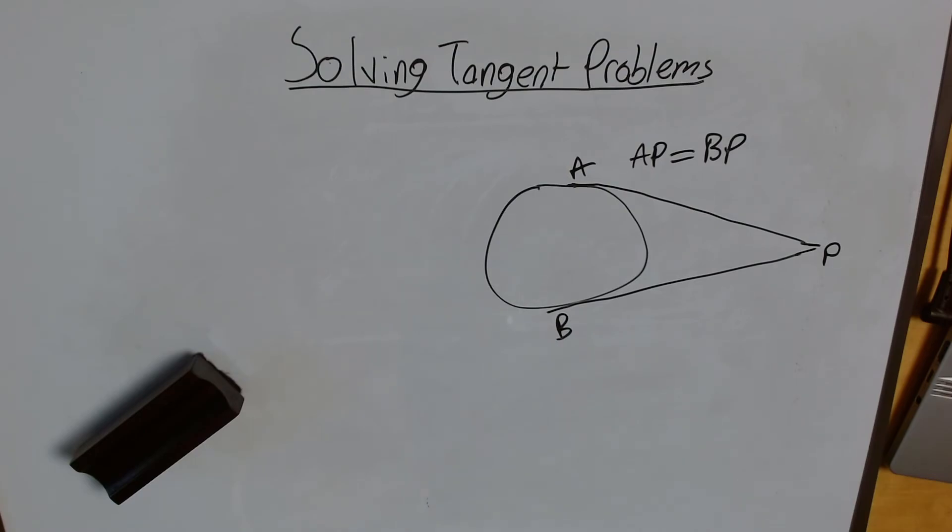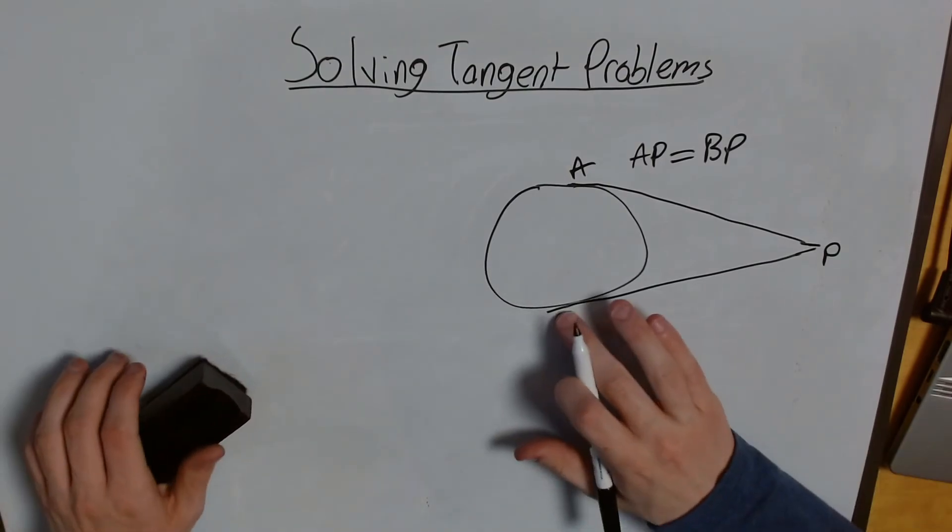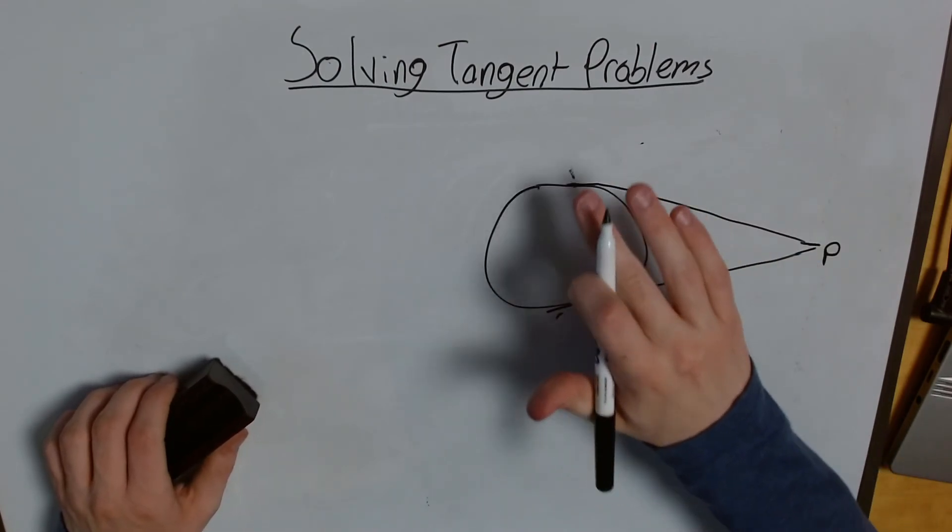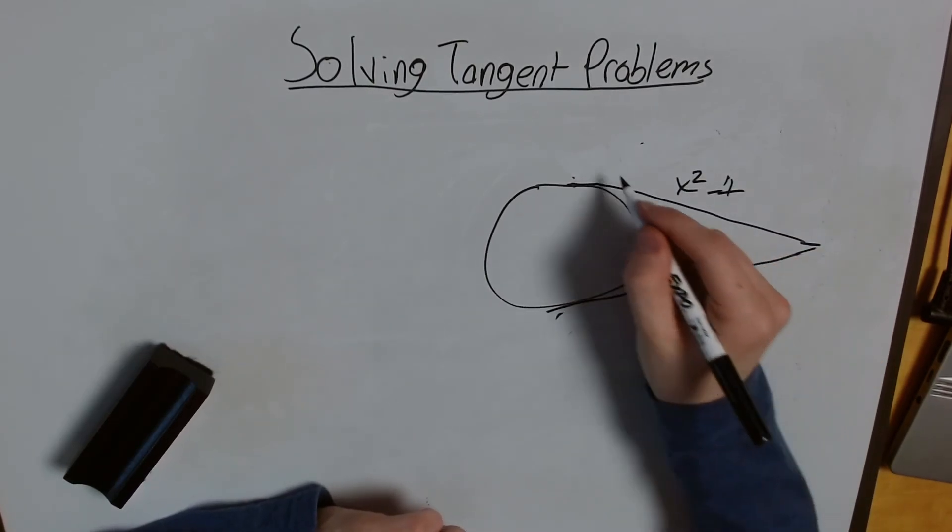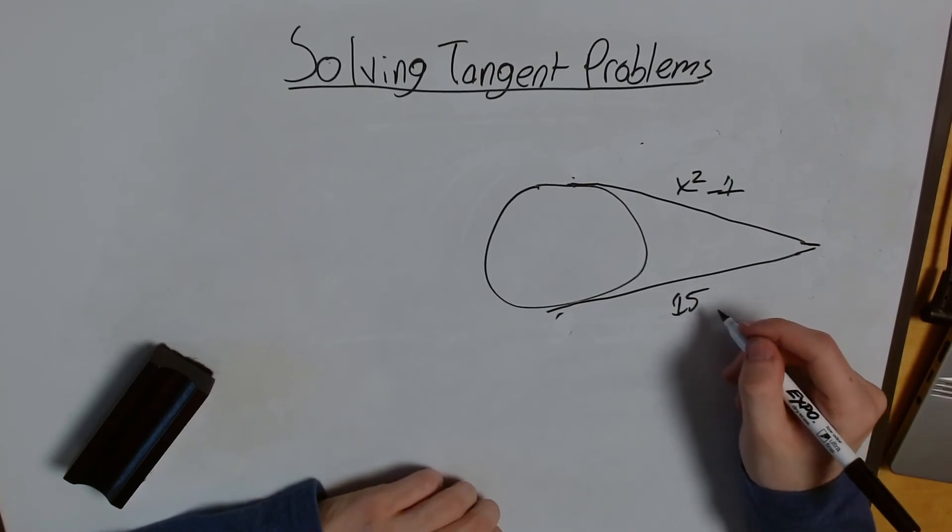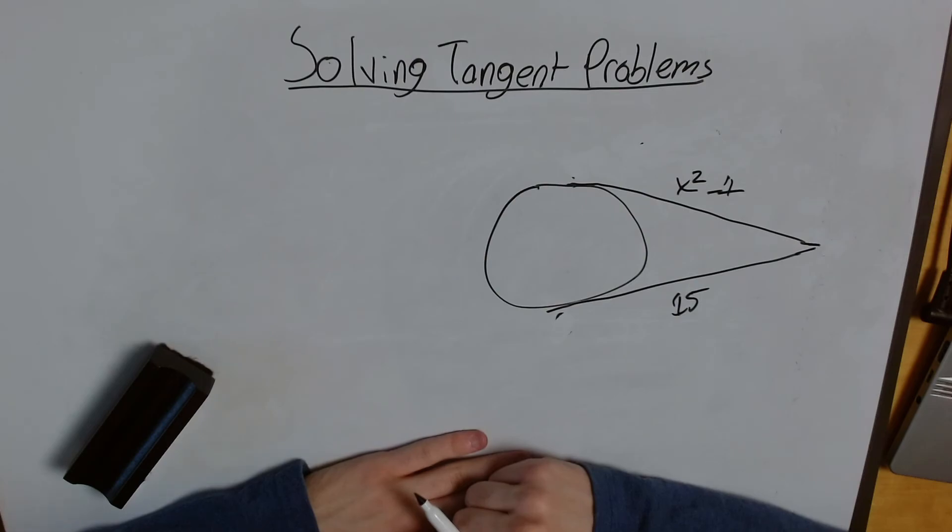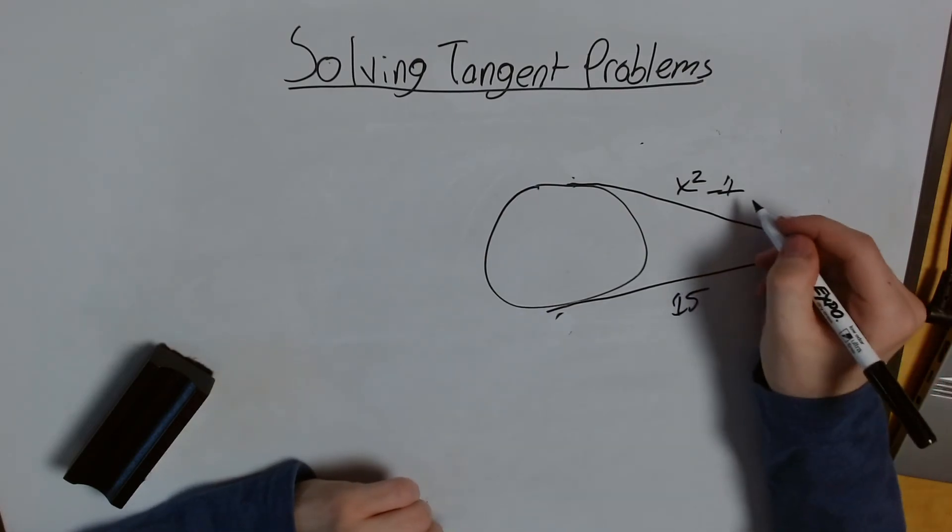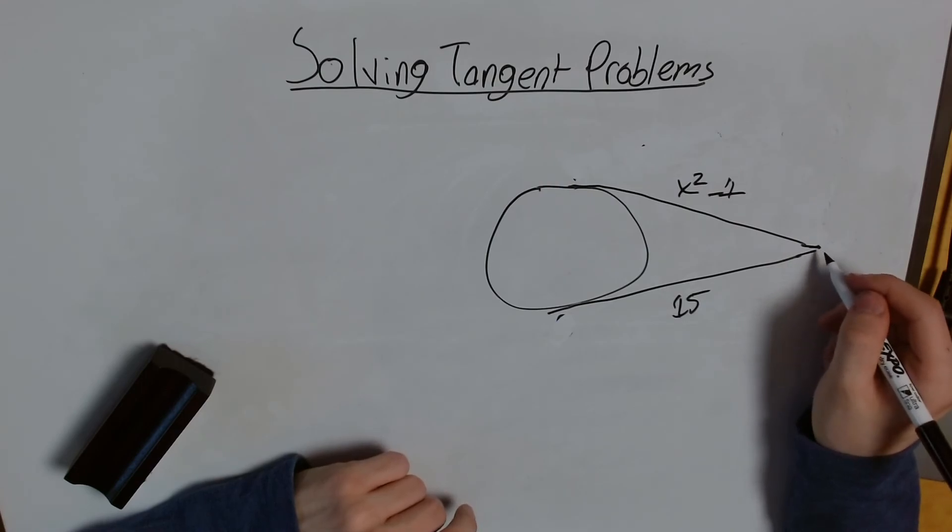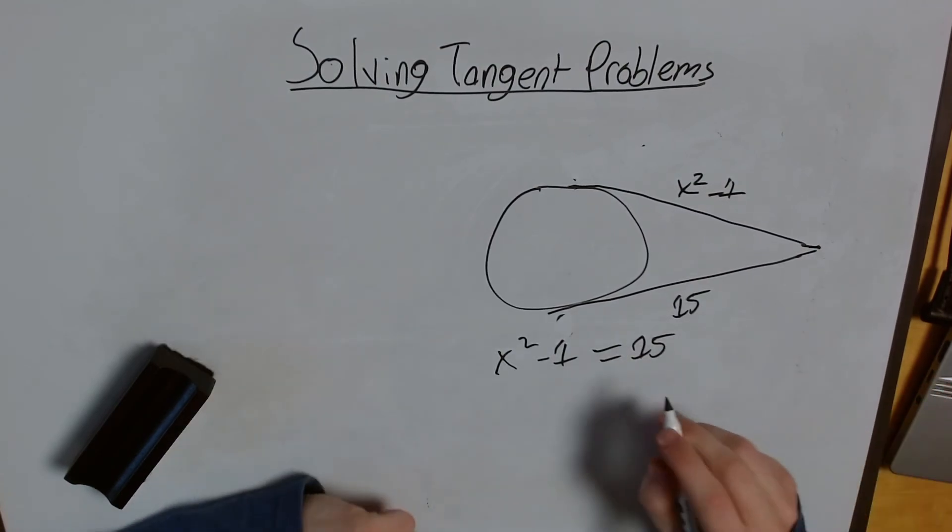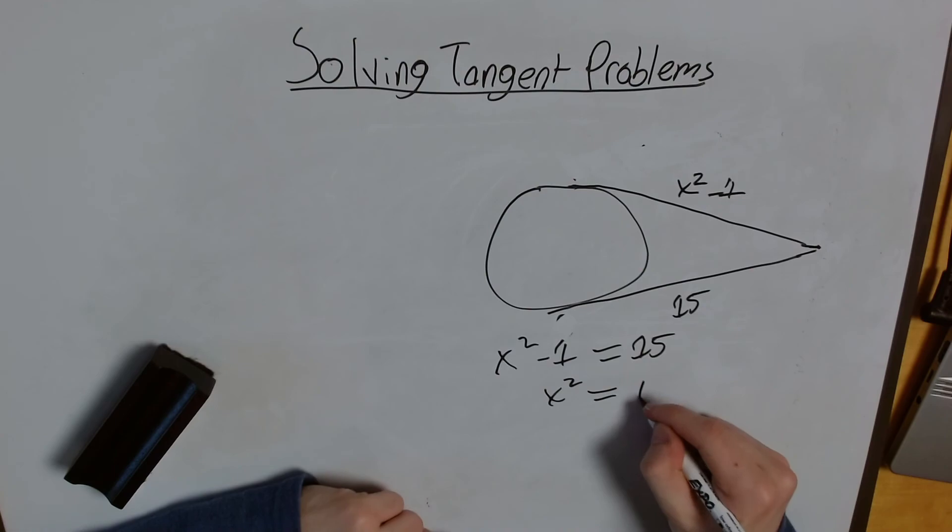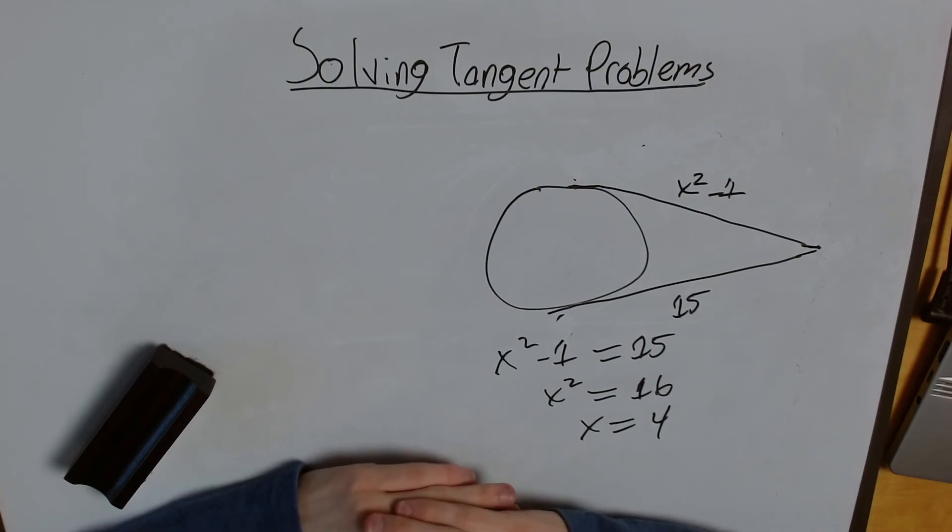This is admittedly a less common one, but can definitely be useful, especially for problems like this. Imagine you're given this shape, and they tell you X squared minus one is the length of this, and 15 is the length of that. They ask you to solve for X. Now, this would look really hard if we didn't know that these two had to be equal because they meet at a common point. So we have X squared minus one equals 15, and now it becomes real easy. X squared equals 16, and X equals 4. I'm going to keep it as 4 because in this case, we're looking at lengths, and we can't have a negative length.